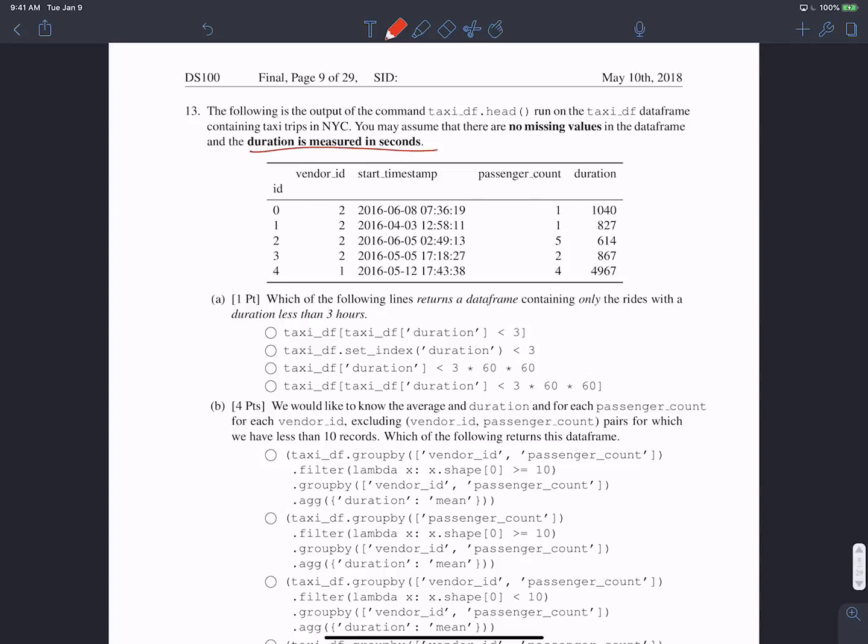In part a, we're asked which of the following lines returns a data frame containing only the rides with duration less than three hours. We can get rid of option two because that doesn't follow proper pandas conditional syntax. Option three doesn't follow the proper pandas syntax for selection either. Now it's between option one and option four. We want only the rides with durations less than three hours, but since duration is measured in seconds, we have to convert three hours to three times 60 times 60 seconds. That means the correct option is the fourth one, because the first one is saying less than three, but that's really three seconds and we want three hours.